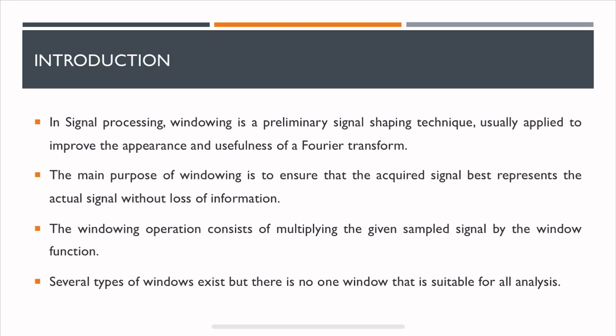In signal processing, windowing is a preliminary signal shaping technique usually applied to improve the appearance and usefulness of a Fourier transform. When you have a signal in the time domain, in order to understand what the signal is made up of, you need to perform a Fourier transform.